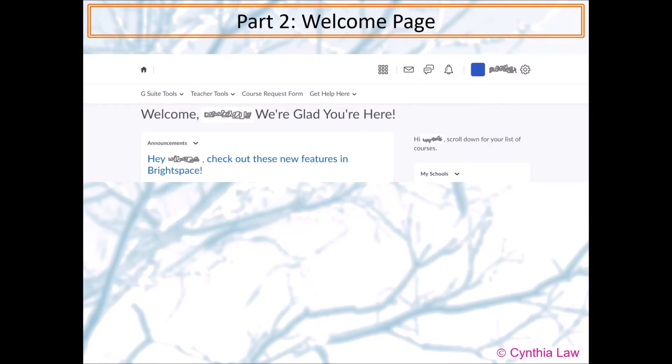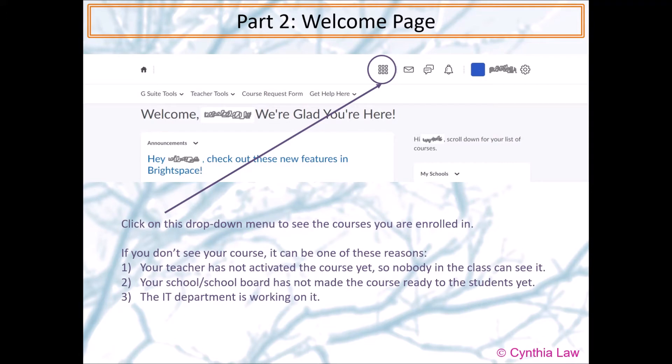Welcome page. Once you're inside, you will see something similar to this. If you click on the icon that has nine squares, you will be able to see the course that you enrolled in. If you don't see your course, it can be one of the reasons. One is that your teacher has not activated the course yet, so nobody in the class can see it. Two is that your school or school board has not made the course ready to the students yet. Three is that there's actually a problem and the IT department is working on it.